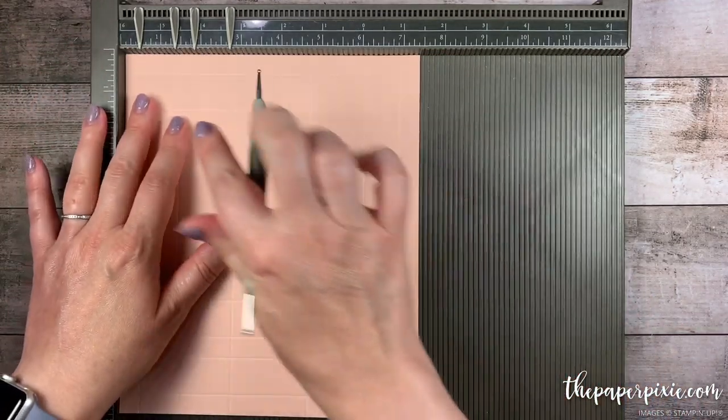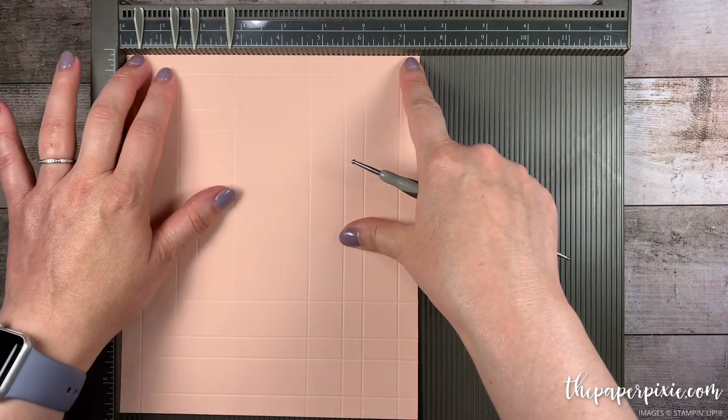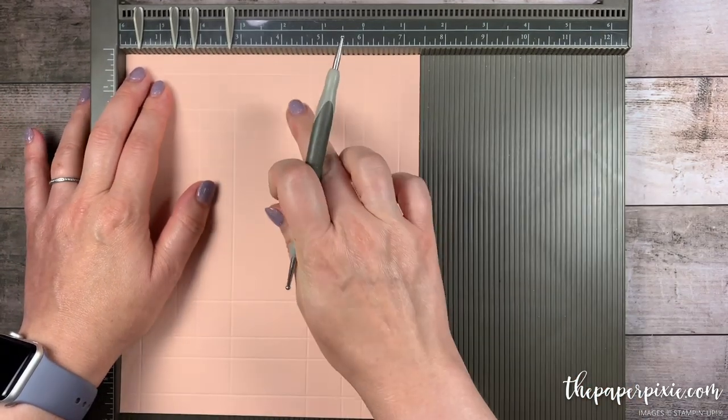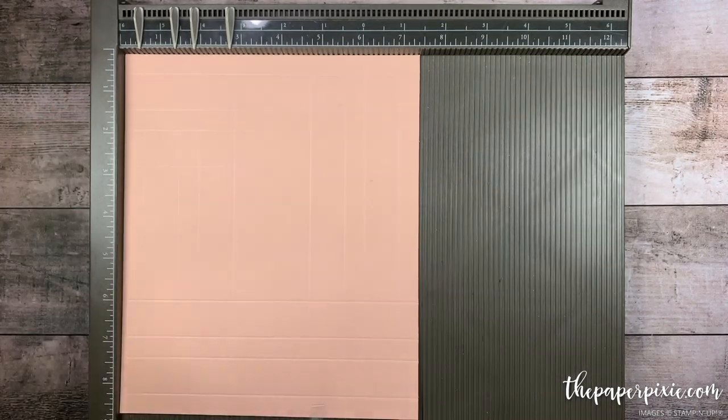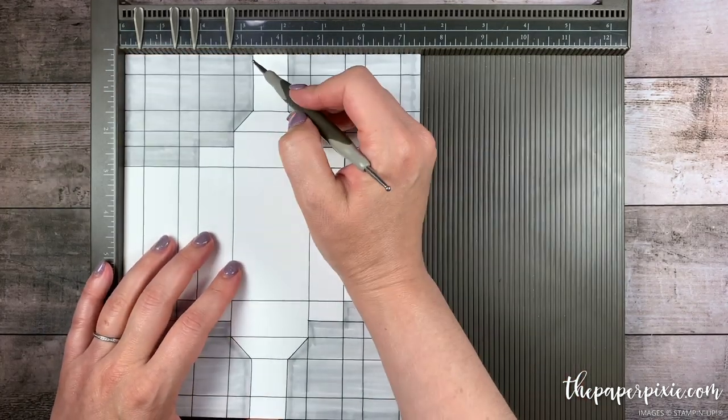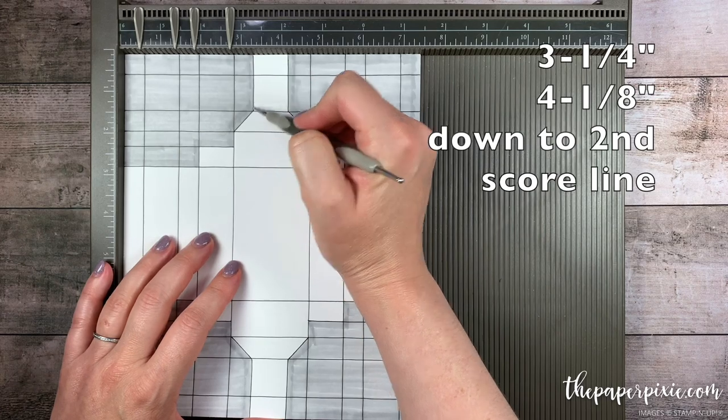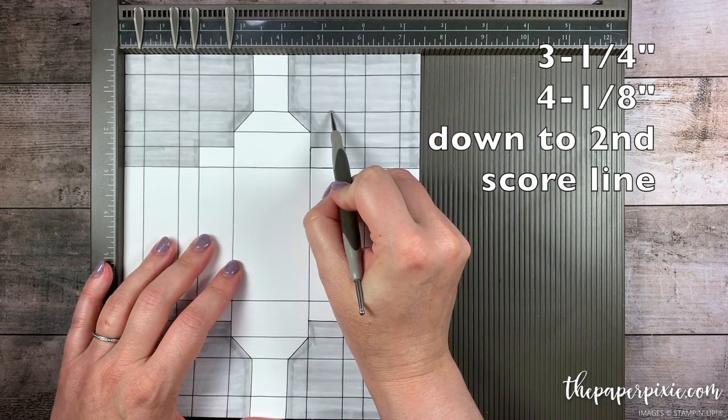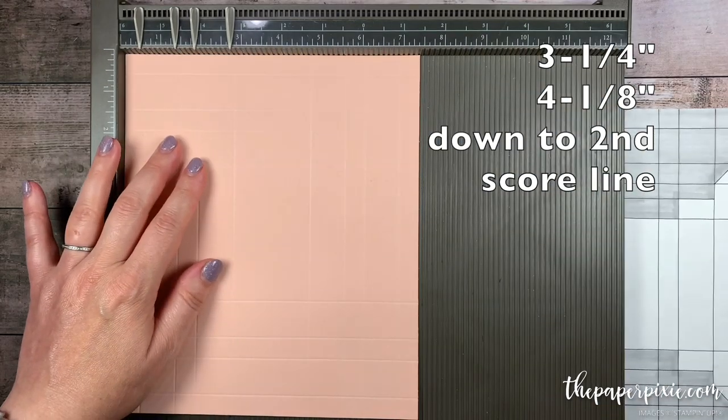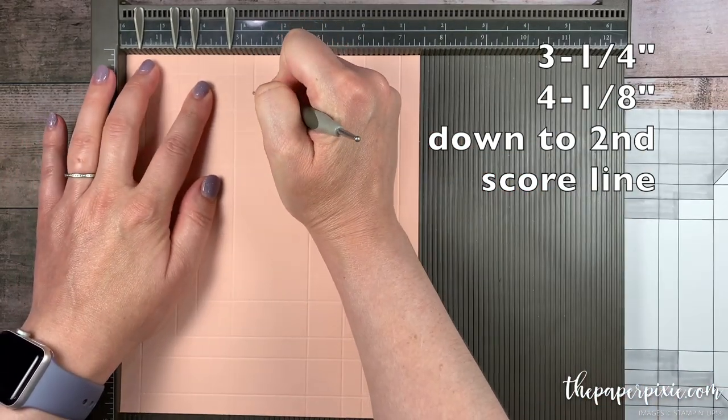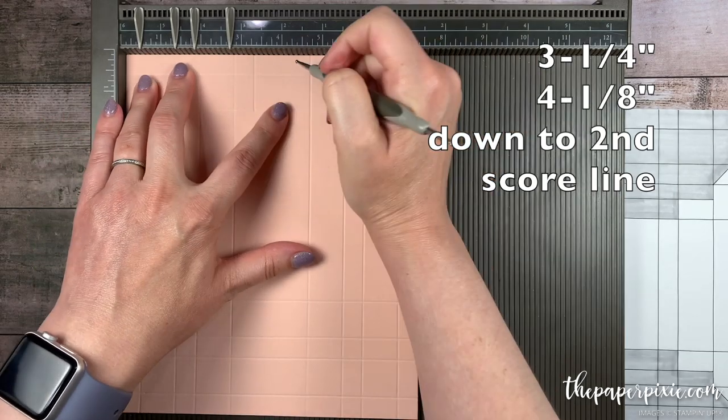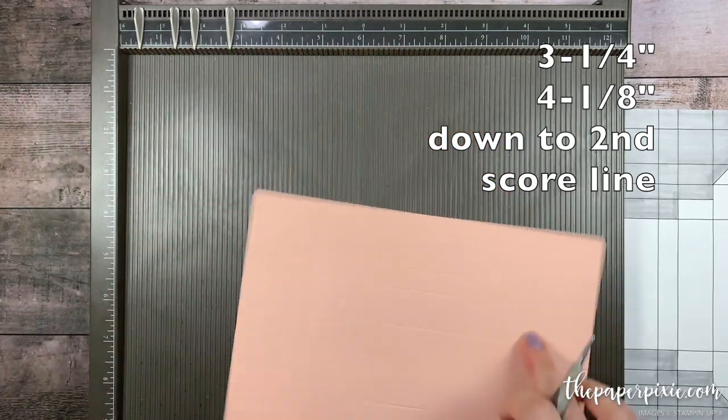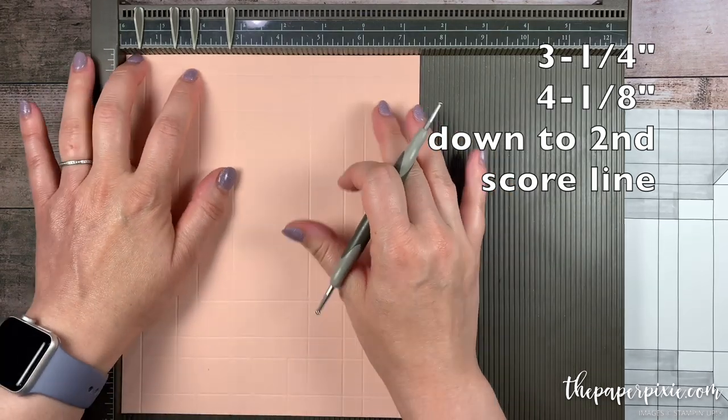Now I'm going to turn this to the shorter side, the 7 3/8 inch side, and we're going to score this in two spots, but only down to the second score line. Let me show you that template really quick. So we're going to score at 3 1/4 and 4 1/8, but stopping at that second horizontal score line. So let's go ahead and do that. 3 1/4, stopping at the second horizontal score line, 4 1/8, then I'm going to rotate this 180 and repeat the same score measurements.